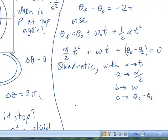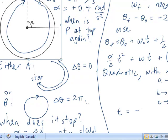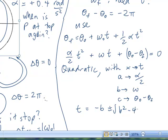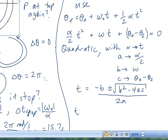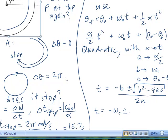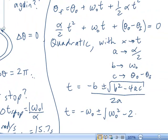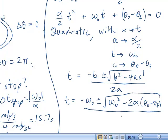So, the solution to the quadratic is going to be t equals negative b plus or minus the square root of b squared minus 4ac all over 2a. Hopefully, everyone kind of remembers the quadratic equation. If you don't, it was on the front of the test. So, let's just plug in all these numbers. t equals negative omega sub zero plus or minus the square root of omega sub zero squared minus 2 times alpha times 2pi, all divided by alpha.